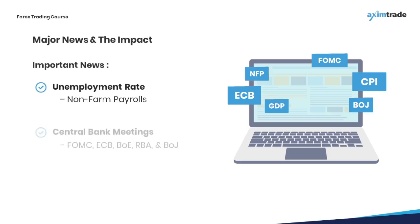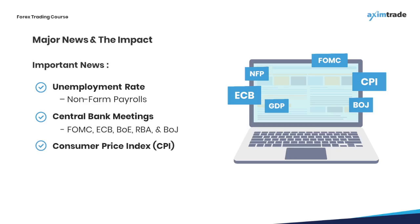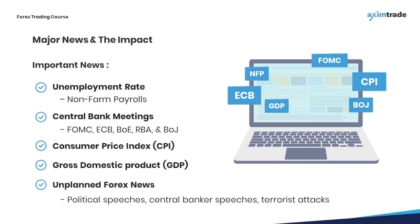The major news types include unemployment and central bank meetings. The most important high-impact forex news releases are the central bank meetings and the interest rate decision. The CPI, or Consumer Price Index, is a measure of inflation based on changes in the price of goods and services. The gross domestic product, GDP, represents all goods and services produced by a nation and shows the inflation-adjusted value of the total goods and services produced in the economy. There is also unplanned forex news.